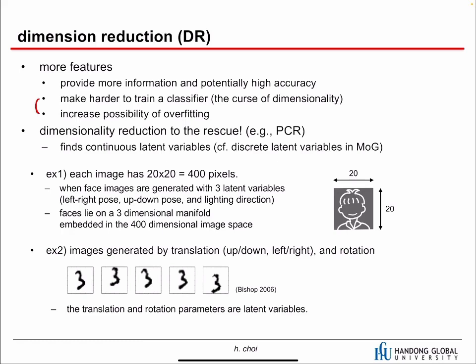This is the other side of the same coin. If we increase the dimensionality we need exponentially more data samples, but usually we don't have that many. If we don't have enough samples to train the classifier, we get overfitting. We will talk about overfitting in detail in the regression chapter. So when we have many features but not many samples, dimensionality reduction algorithms come to the rescue, like principal component regression (PCR).